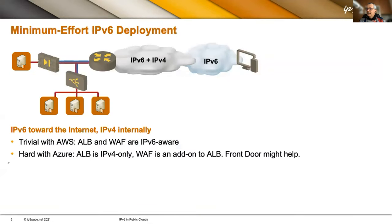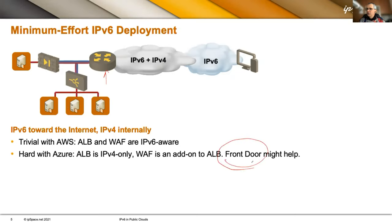For the minimum-effort IPv6 deployment — the way to cheat if someone wants IPv6 access to your services and you can't fully turn it on — you have IPv6 on the outside, then dual stack to your first box, then switch over to IPv4 through a firewall or load balancer. You don't need customer IP tracking. This works with AWS because all the services you need are IPv6-aware. With Azure, you can use Front Door, which is dual-stack and supports v4 and v6 targets on the backend.